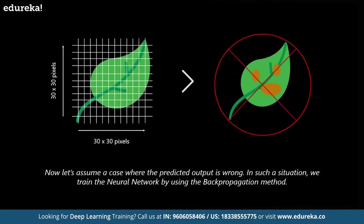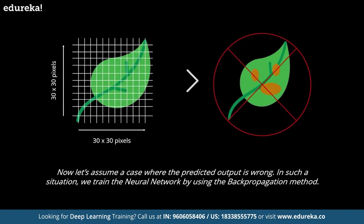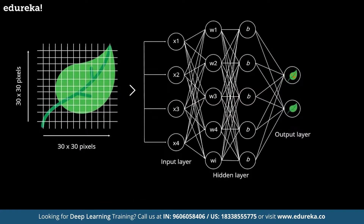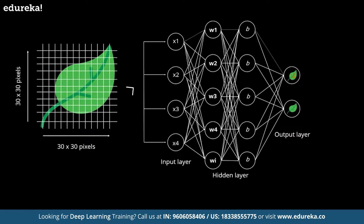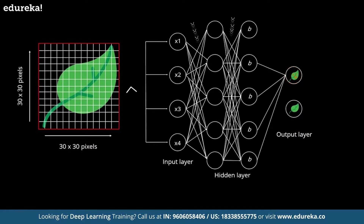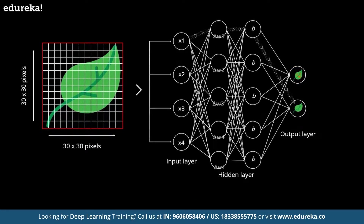Now let's assume a case where the predicted output is wrong. In such a situation, we train the neural network by using the back propagation method. Initially, while designing the neural network, we initialize weights to each input with some random values. These weights denote the importance of each input variable. Therefore, if we propagate backward in a neural network and compare the actual output to the predicted output, we can readjust the weights of each input in such a way that the error is minimized. This results in a more accurate output, and this is exactly what back propagation means.